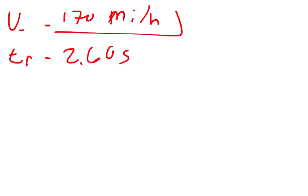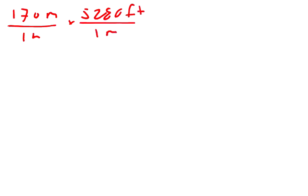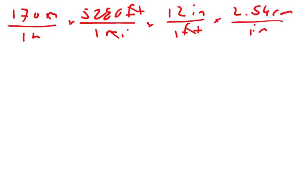We want to convert this into meters per second. So 170 miles over one hour, multiply that by 5,280 feet in one mile, that cancels out the miles. Then multiply by 12 inches in one foot, that cancels out the feet. Multiply by 2.54 centimeters per inch, that cancels out the inches.